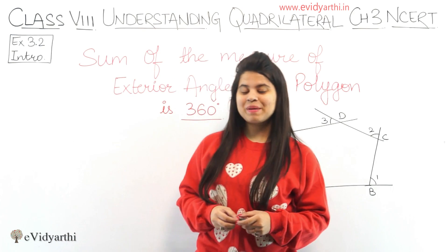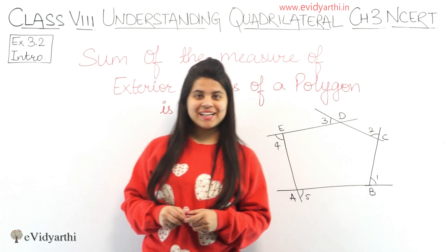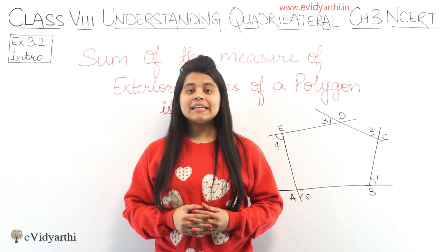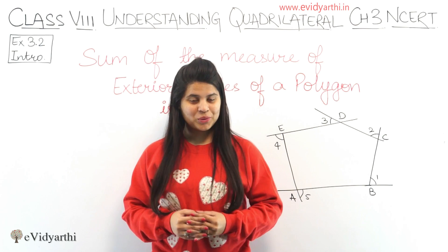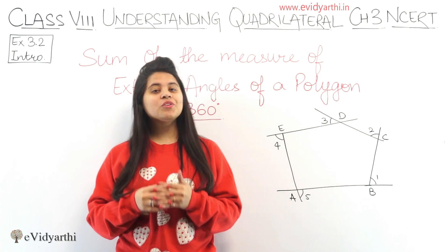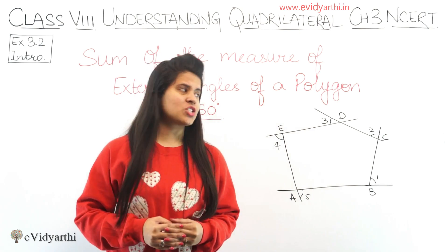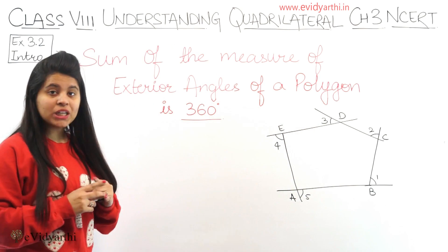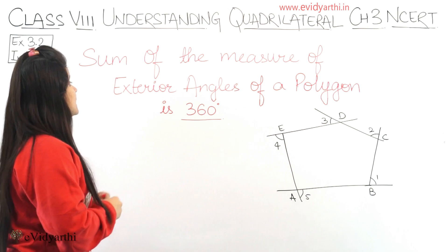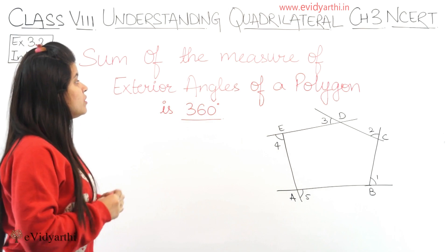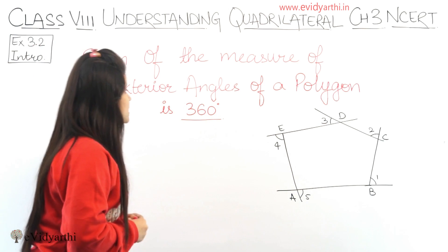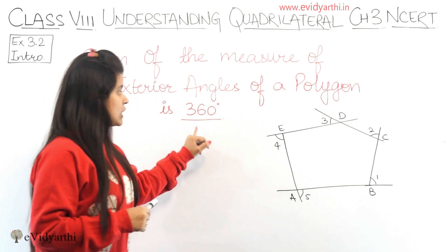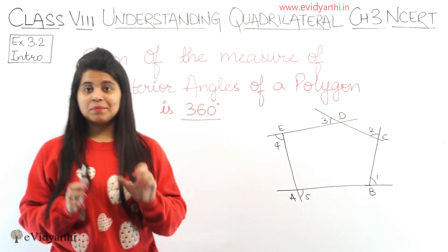Hello everyone, this is Mansi from AV9.in. Now before starting exercise 3.2, I want to give you a short introduction. This exercise will use the property that the sum of exterior angles of a polygon is 360 degrees.